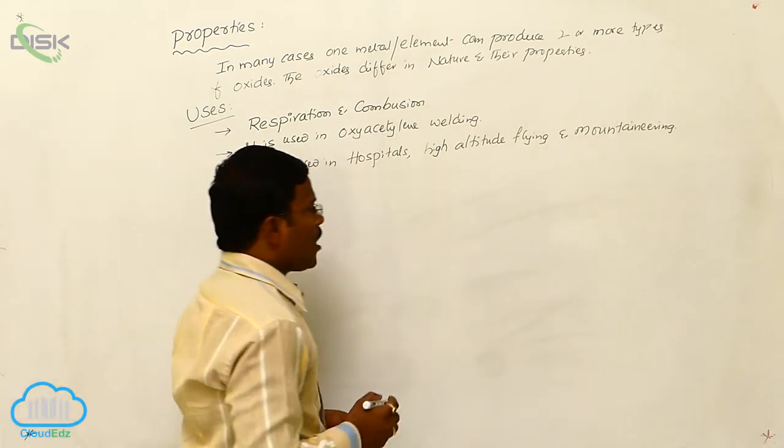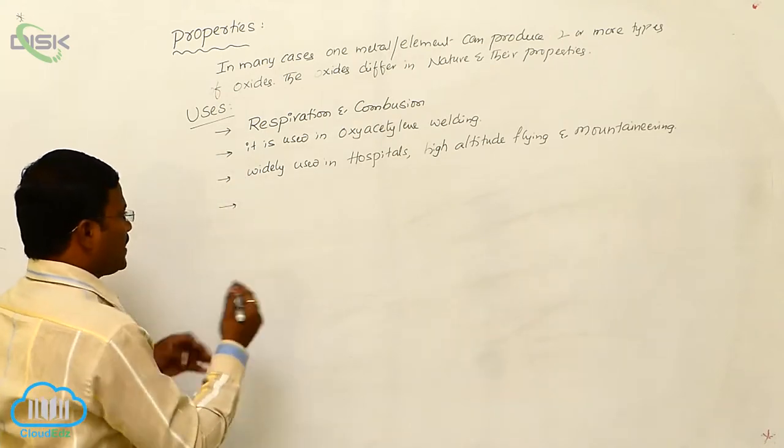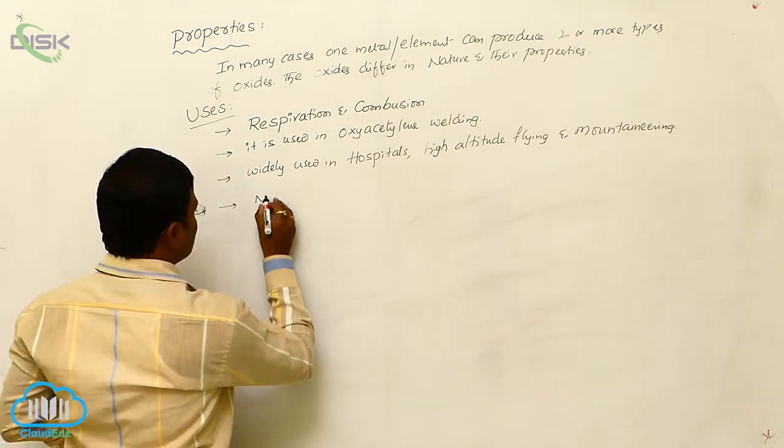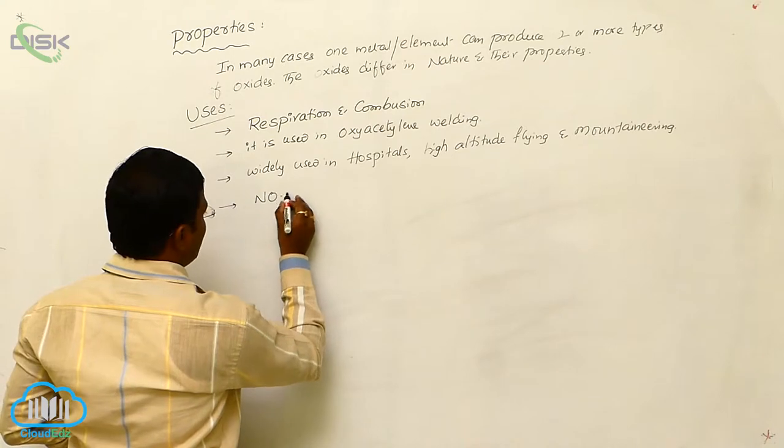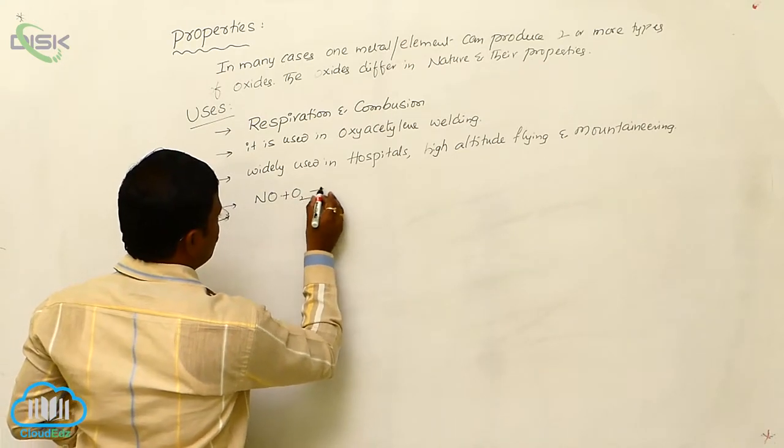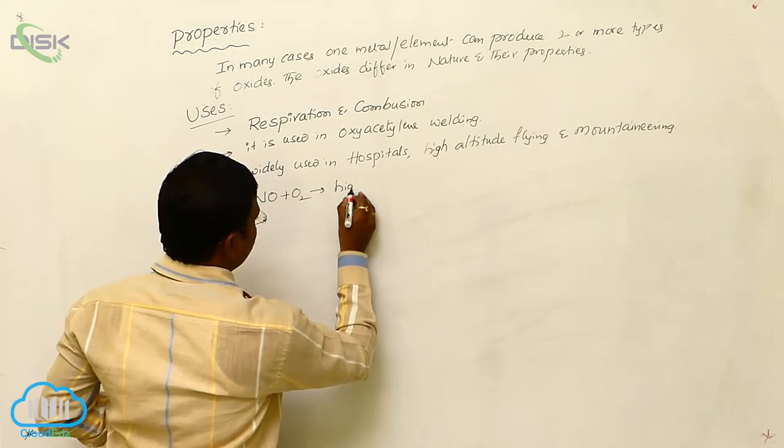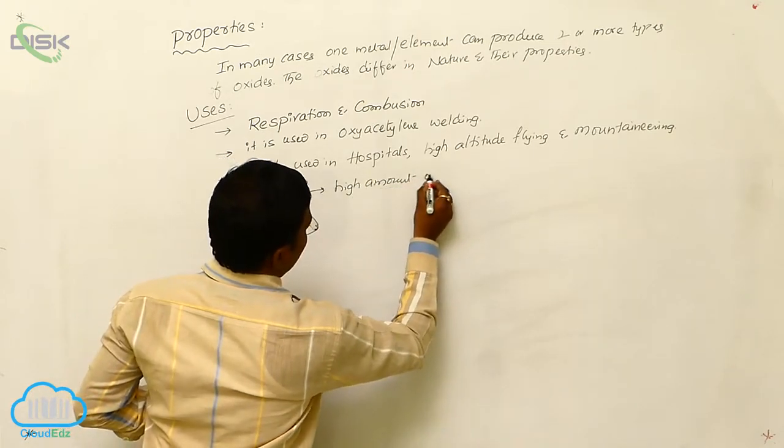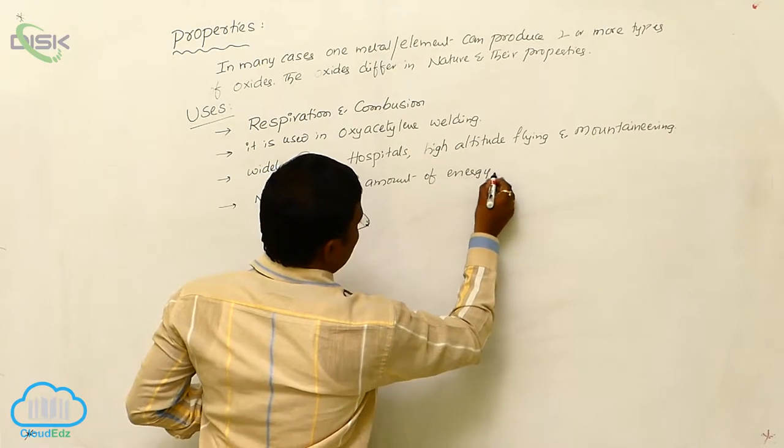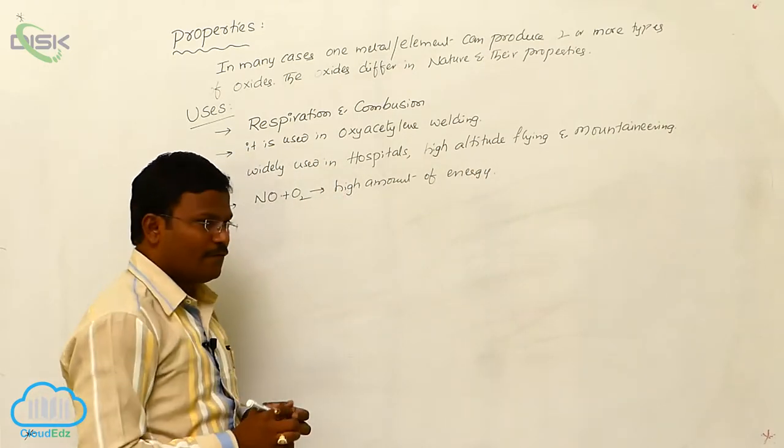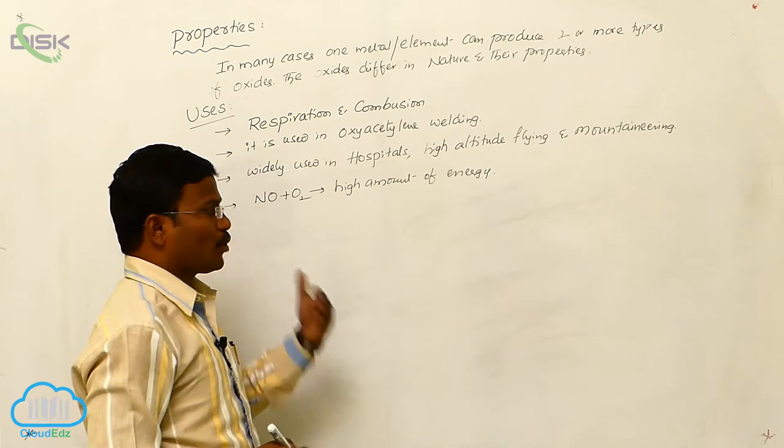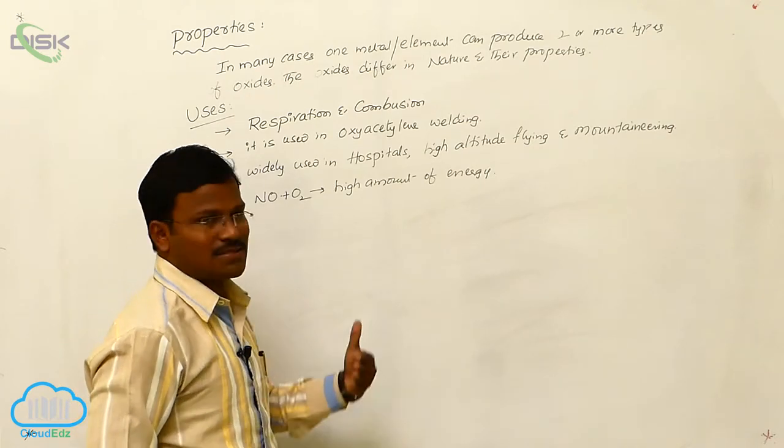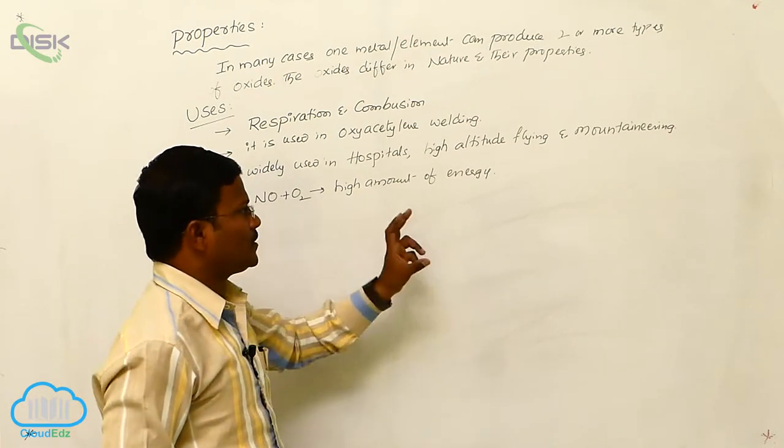This oxygen generally by reacting with nitrogen oxides, especially nitric oxide reacts with oxygen to produce high amount of energy. This high amount of energy will be helps to produce tremendous thrust in rocket flying.